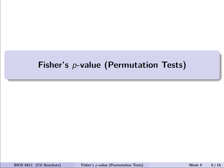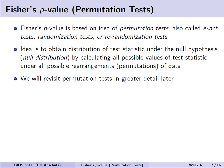So let's discuss Fisher's p-value, or this idea of permutation tests. Fisher's p-value is based on the idea of permutation tests, also what we might call an exact test, a randomization test, or a re-randomization test. So there's a lot of names that this may go by out in the wild when you encounter it. The general idea, though, is to obtain the distribution of a test statistic under the null hypothesis by calculating all possible values of the test statistic under all the possible rearrangements or permutations of your data. We'll revisit this idea of permutation tests in greater detail later as well.